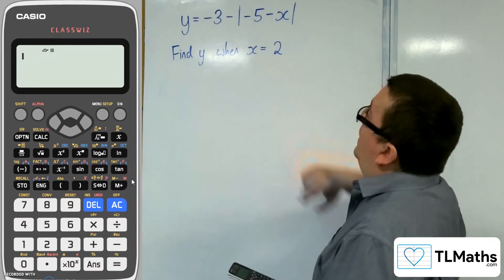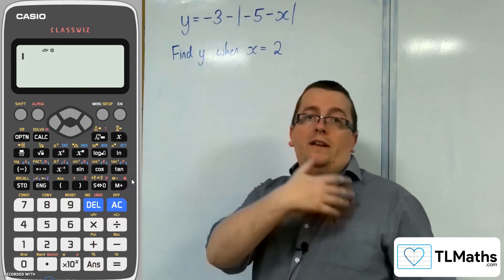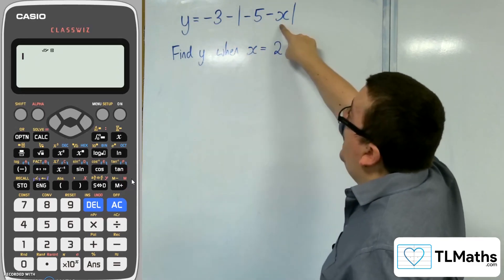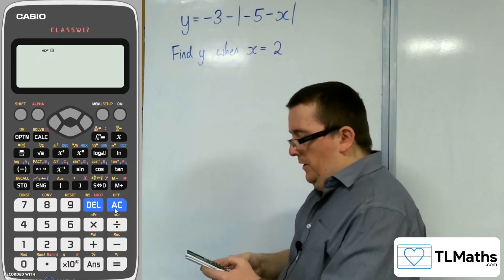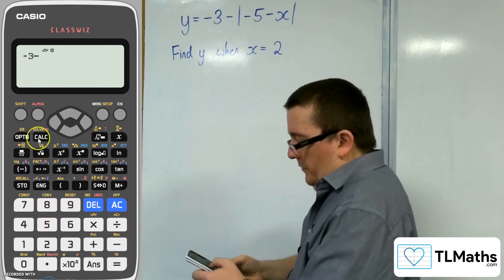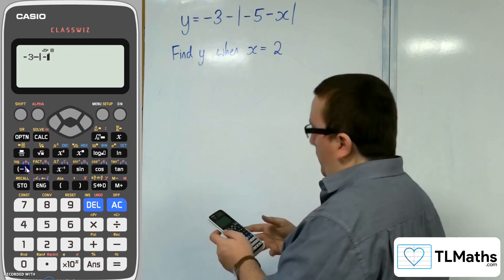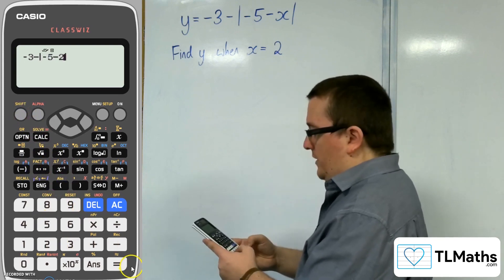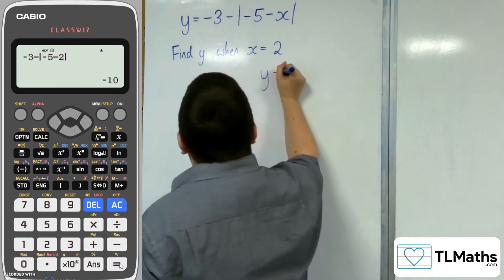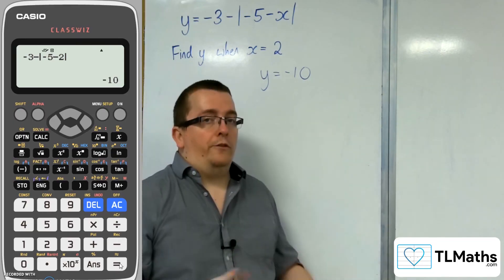Let's say you want to find y when x = 2. There's lots of minus signs going on, there's the modulus sign, it all gets a little bit confusing. I want to type in this line here with the x as 2. So -3, take away, now the absolute button, so shift and then bracket, and you'll see the modulus signs come up. Then -5, take away 2, press equals, and we get -10. So it does all the work for us.